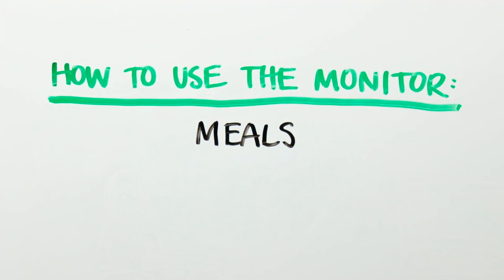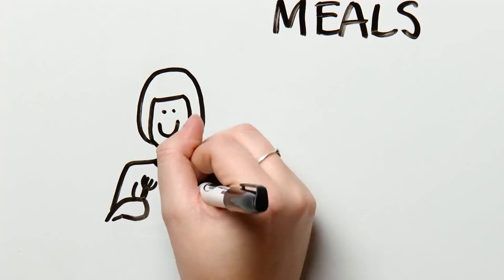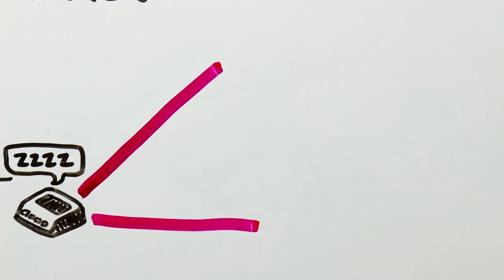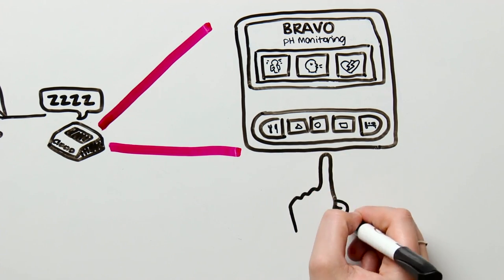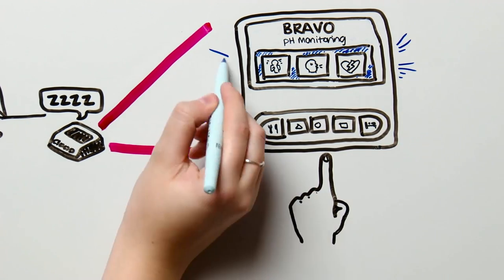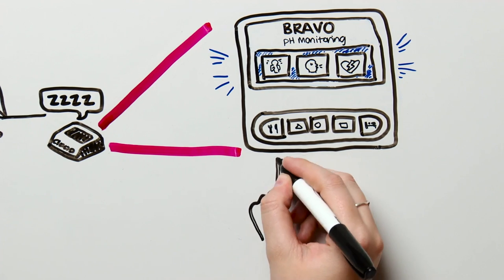Now let's take a look at what it looks like to use the monitor to record your meals. First, you wake up the monitor, which you can do by pushing any of the buttons. When you push any button, you will see the monitor backlight come on. Now that we have the monitor awake, push the meal button.